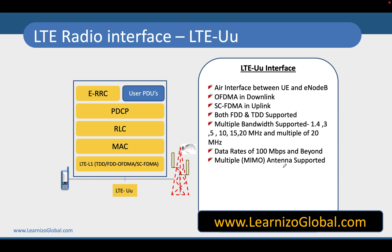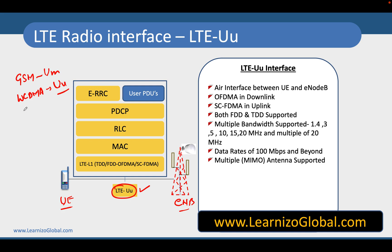Welcome to this video. We are going to talk about the interface between the UE and the eNodeB. This interface is typically referred to as the LTE-Uu interface. It started from GSM, where it was named the Um interface. In WCDMA it was named Uu, in LTE it is named LTE-Uu, and in 5G it will be called the NRU interface.